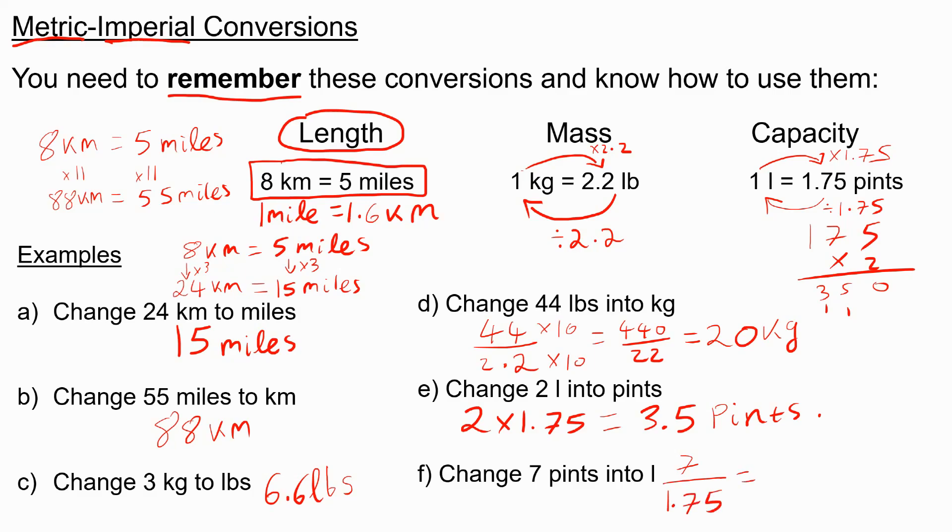You'd probably have a calculator for that, but if not, you could times top and bottom by 100 to get 700 over 175. And this works out to be 4. So you'll end up with 4 liters.